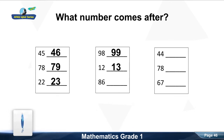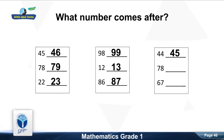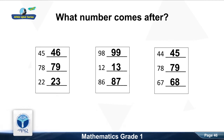What number comes after eighty-six? Good, eighty-seven. What number comes after forty-four? Good, forty-five. What number comes after seventy-eight? Good, seventy-nine. What number comes after sixty-seven? Good, sixty-eight.